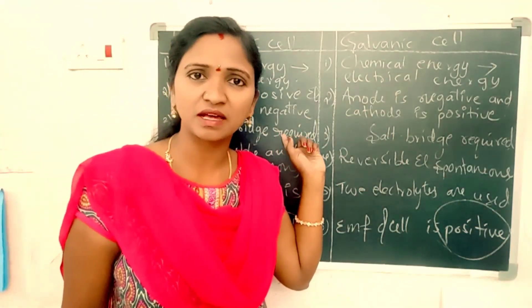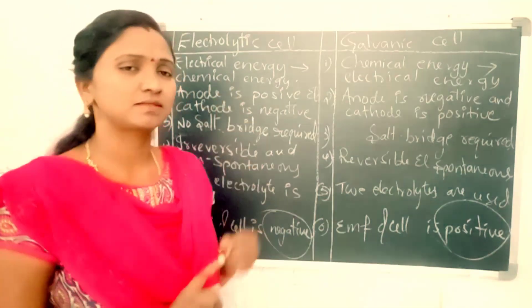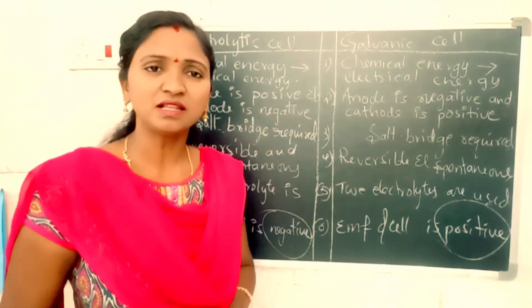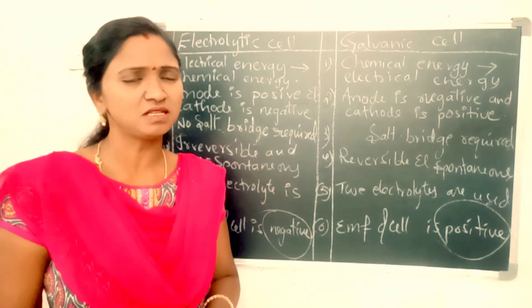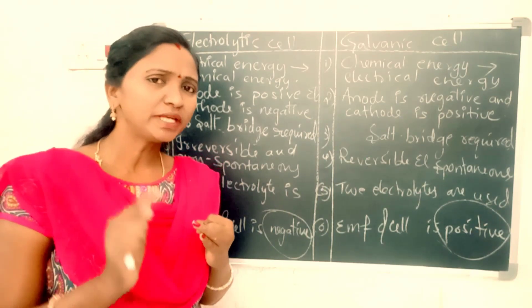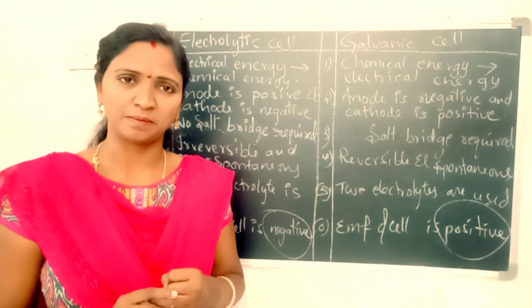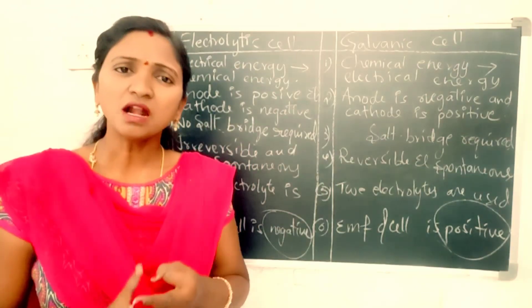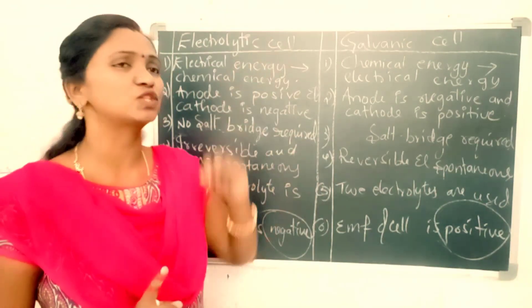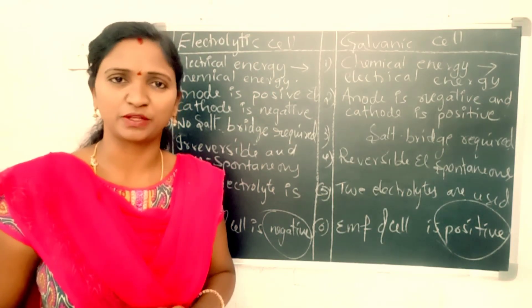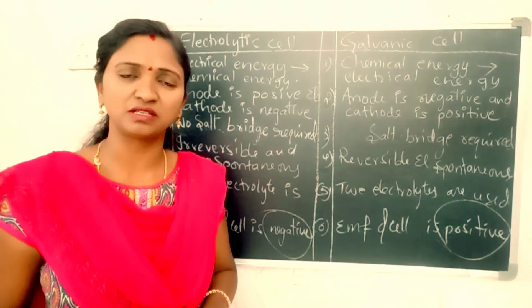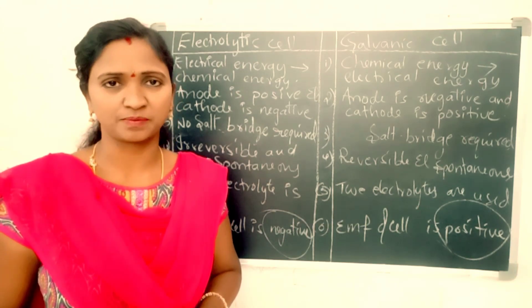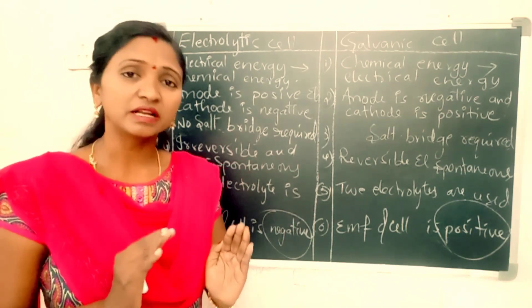To summarize the differences: electrolytic cell converts electrical energy into chemical energy; galvanic cell converts chemical energy into electrical energy. In electrolytic cell, anode is positive and cathode is negative; in galvanic cell, anode is negative and cathode is positive. There is no salt bridge required in an electrolytic cell, but a salt bridge is required in a galvanic cell. Reactions in electrolytic cell are irreversible and non-spontaneous; reactions in galvanic cell are reversible and spontaneous.